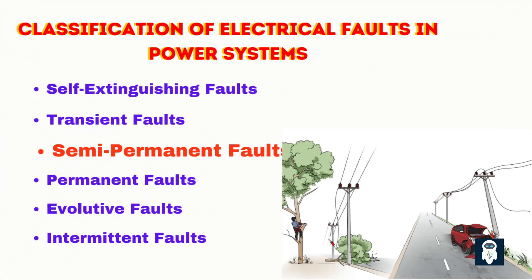Semi-permanent faults require protective devices to operate and may need one or two resets by automatic recovery mechanisms. These faults arise from conditions that are more persistent but still self-limiting over time, caused by external factors that degrade or clear with time, and are typically resolved without manual intervention after multiple resets. An example is vegetation growth — branches brushing against power lines and burning off during fault currents — resulting in temporary outages and brief interruptions from multiple resets.